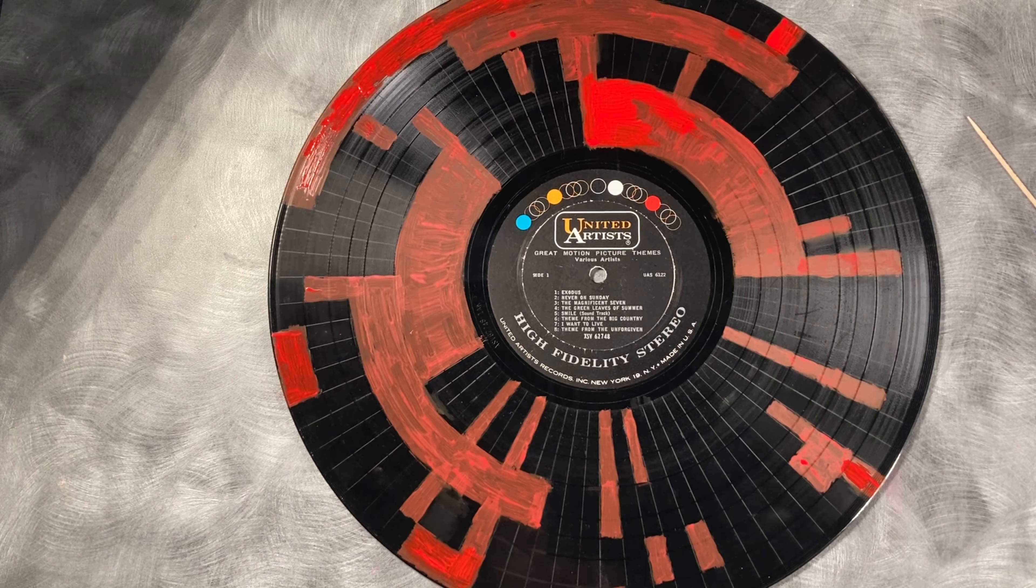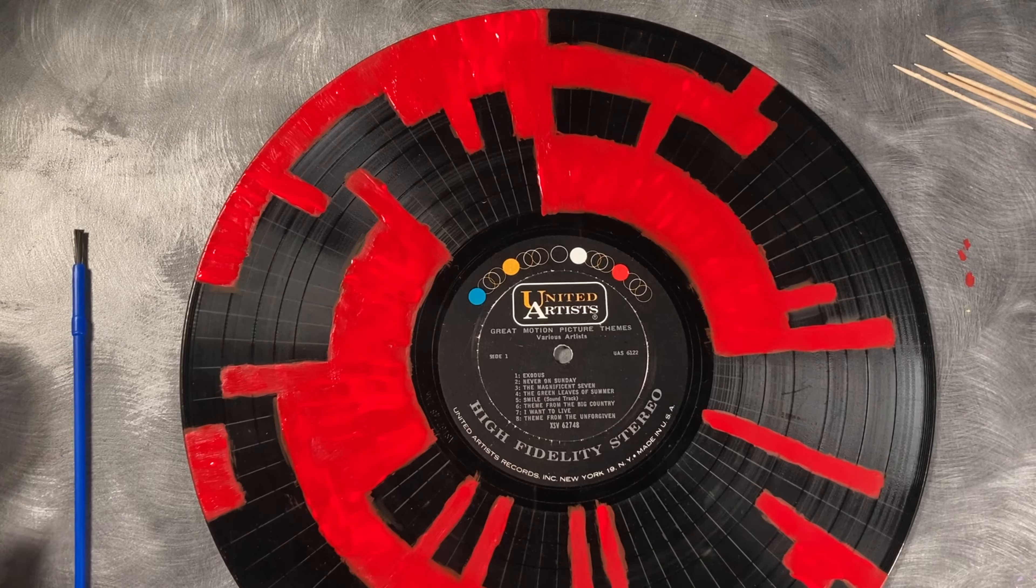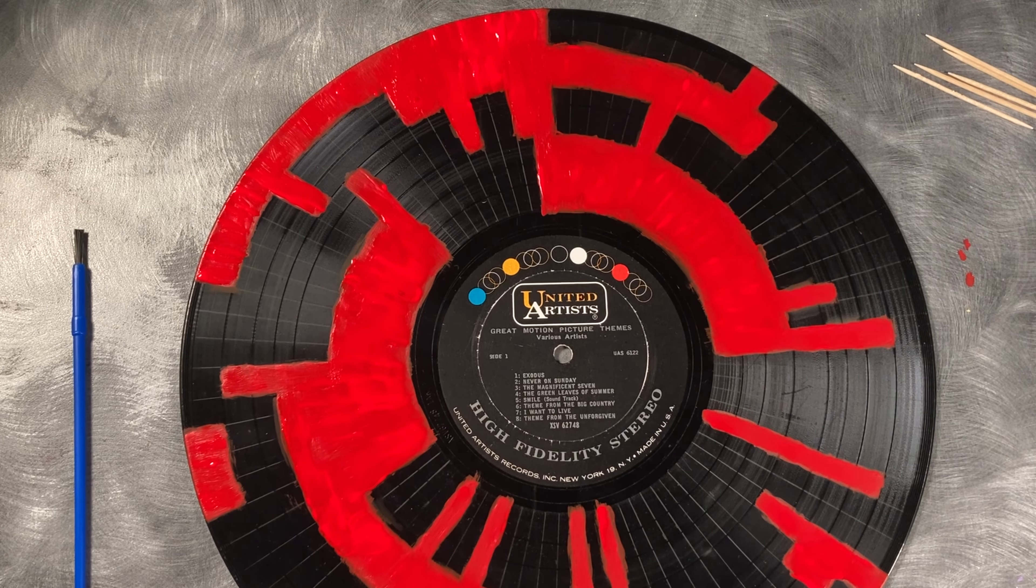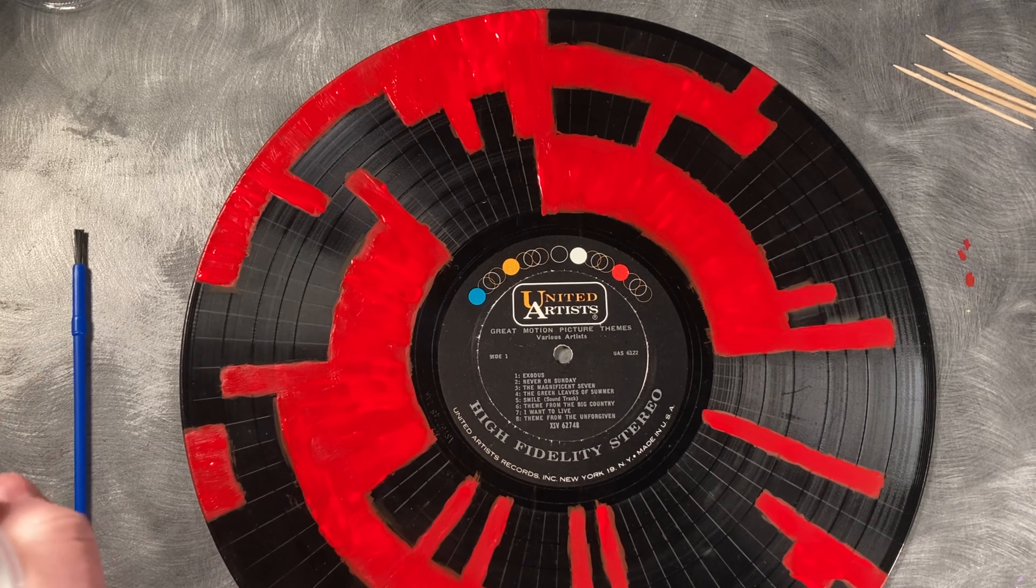So I've got the first coat of red paint on. I'm going to do a second coat just so it looks a little bit brighter. When you've got your red paint where you'd like it, go ahead, clean your paintbrush, grab your white paint, and just fill in all the other sections with white paint.